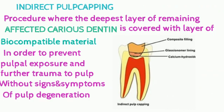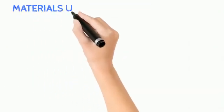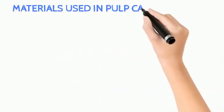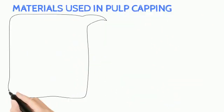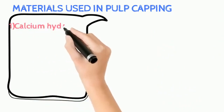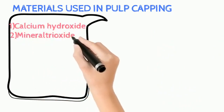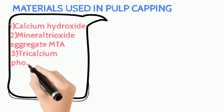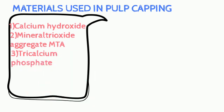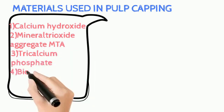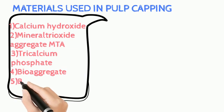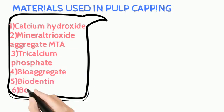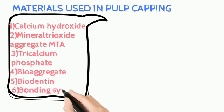Now let's learn what the pulp capping materials are: 1. Calcium hydroxide. 2. Mineral trioxide aggregate, also called MTA. 3. Tricalcium phosphate. 4. Bio aggregate. 5. Biodentine. 6. Bonding systems, and others. The most commonly used pulp capping agent is calcium hydroxide.